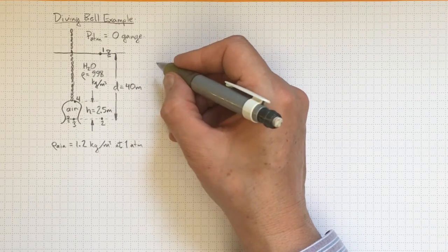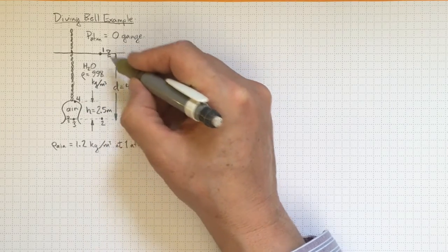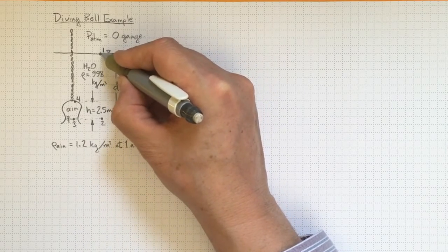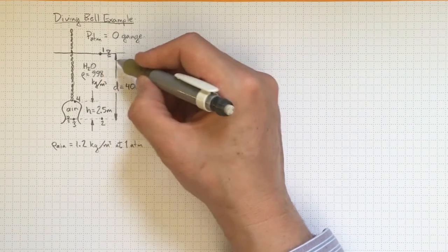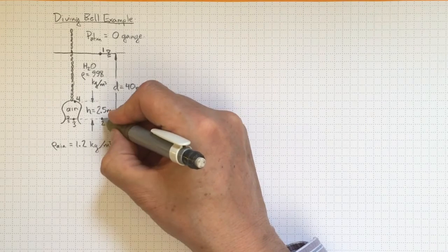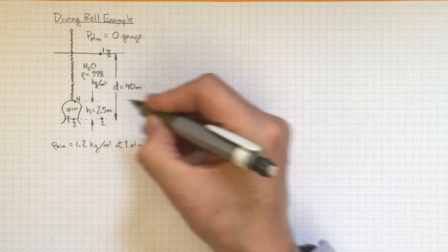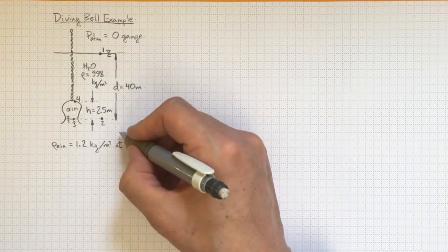Now we'd like to know what are the pressures at different locations in this field. We know here we're at atmospheric pressure, zero gauge at the surface of the water, and we know that the pressure is going to increase as we go down below the water to get to location 2. So how would we get to the pressure at location 2?